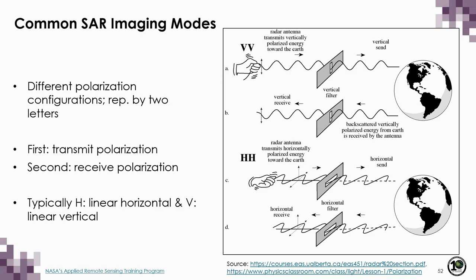Now we'll talk about some common SAR imaging modes. SAR sensors are designed to transmit microwaves of a specific polarization and also receive a specific polarization only. It is necessary to define both the polarization of the transmitted wave and the polarization that is received, using a combination of two letters — the first indicating what polarization was transmitted and the second indicating what polarization was received. The most common transmit-receive polarizations are combinations of linear horizontal (H) and linear vertical (V).